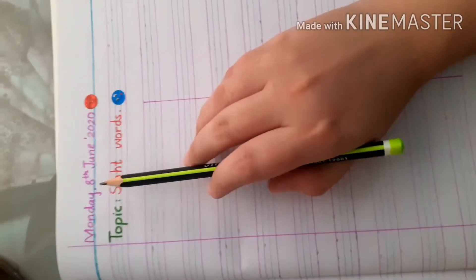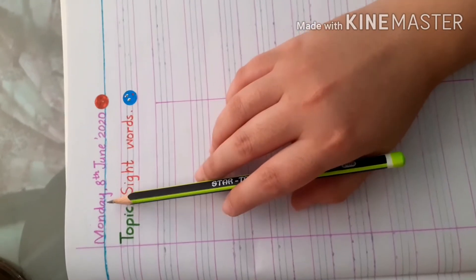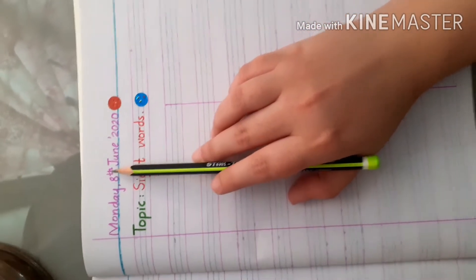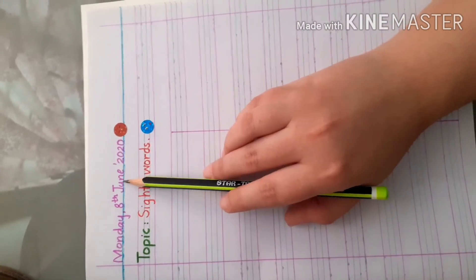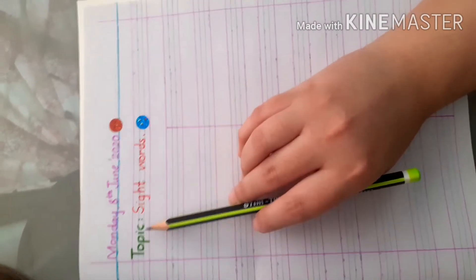Okay, first let's read it. What day is today? Today is Monday 8th June 2020.